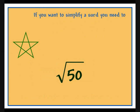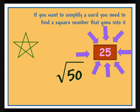If you want to simplify a surd, you need to find a square number that goes into it.